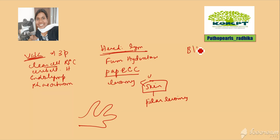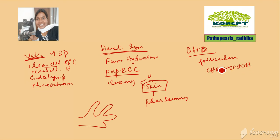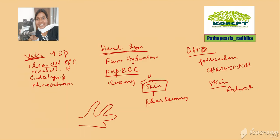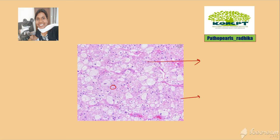Next is Birt-Hogg-Dubé syndrome, associated with mutation in the folliculin gene. They can develop various renal tumors — oncocytomas or others — but most common is chromophobe RCC. It can also be associated with skin tumors like skin tags and acrochordomas. Chromophobe RCC shows granular pink cytoplasm, unlike clear cell RCC which has clear cytoplasm. To summarize: VHL is associated with clear cell RCC, hereditary leiomyomatosis with papillary RCC, and Birt-Hogg-Dubé with chromophobe RCC.